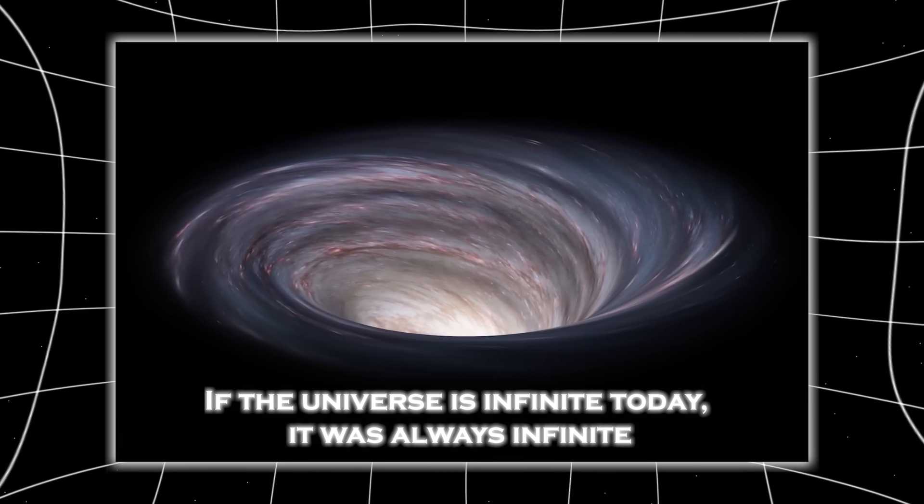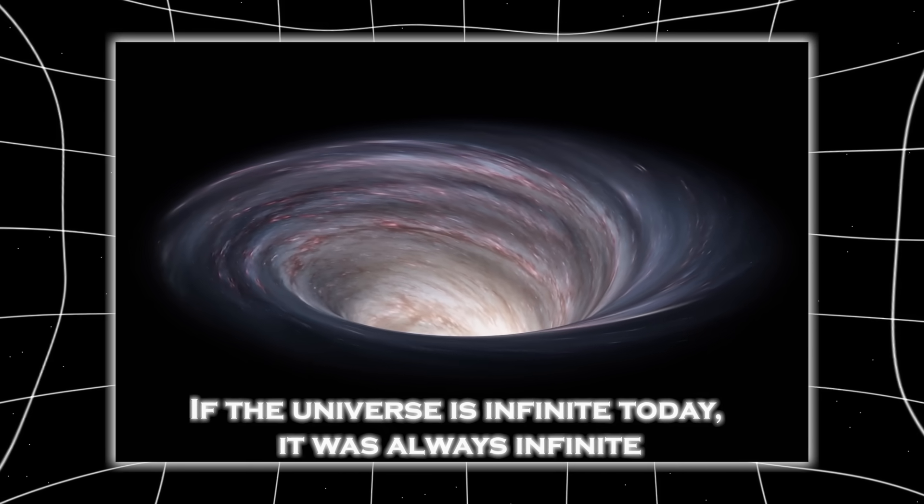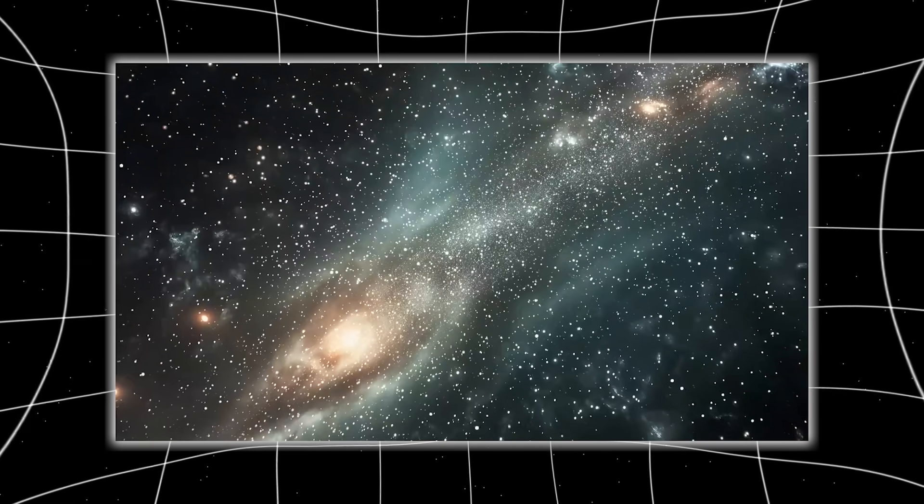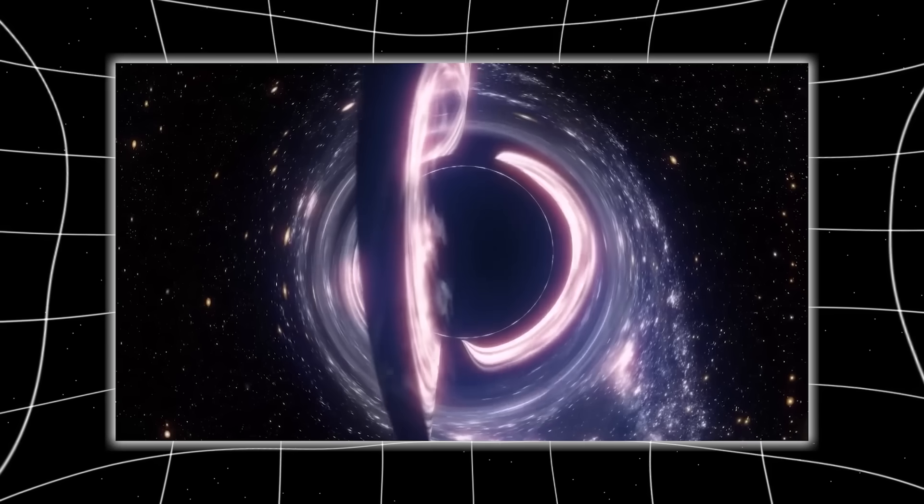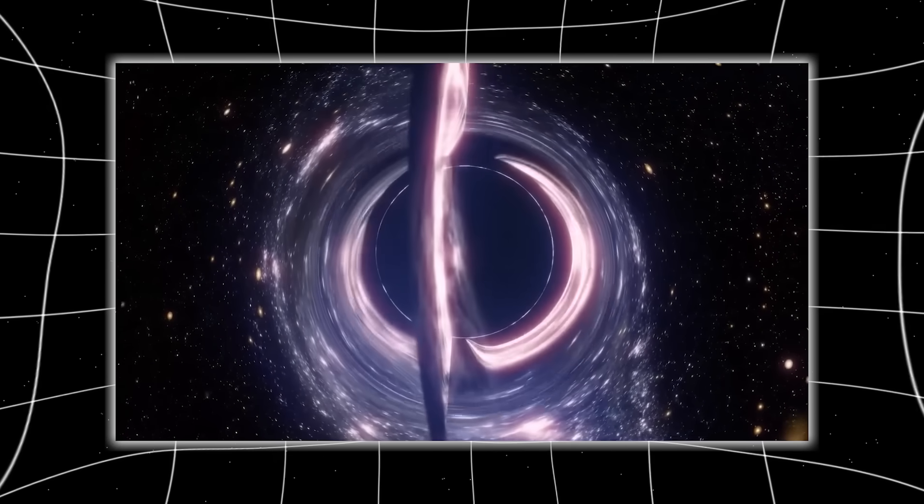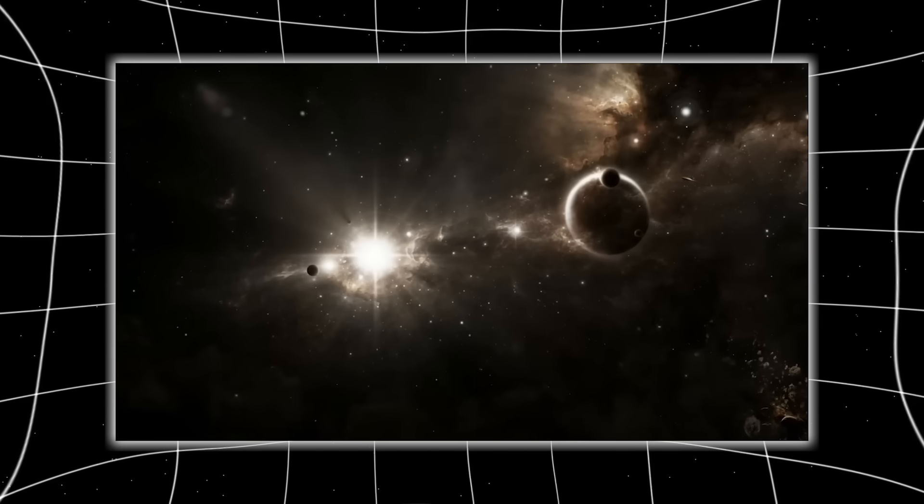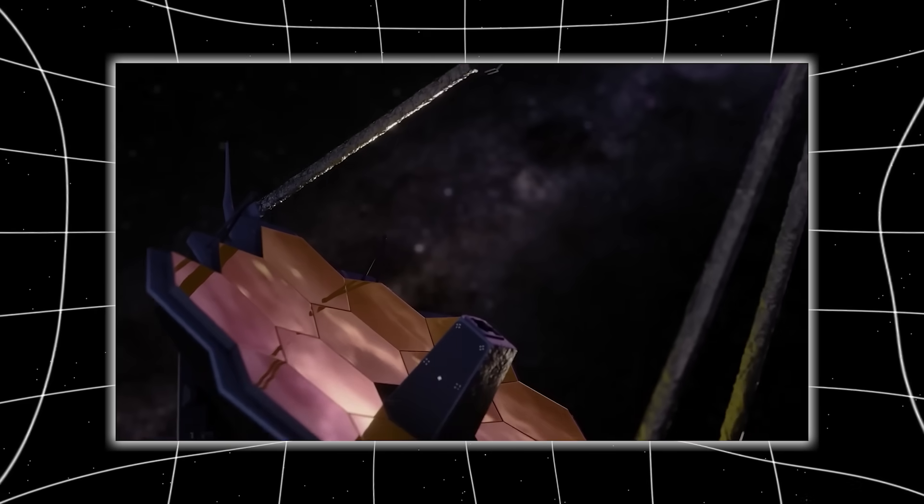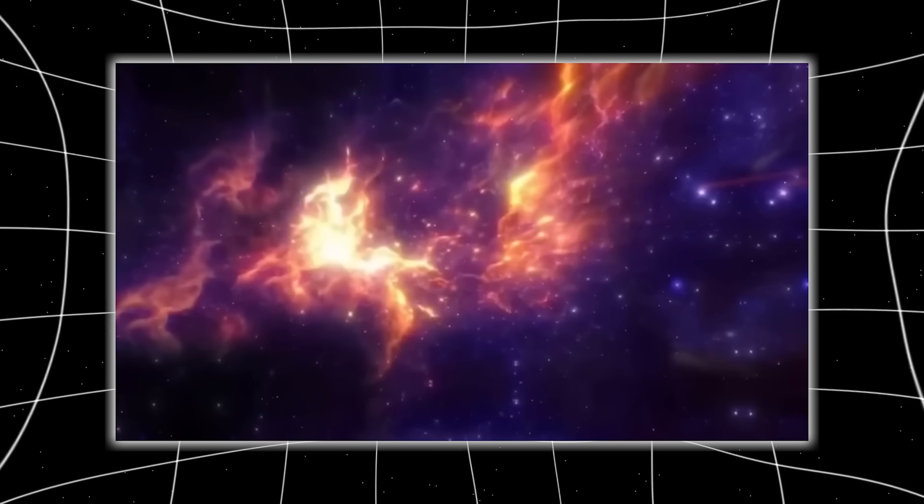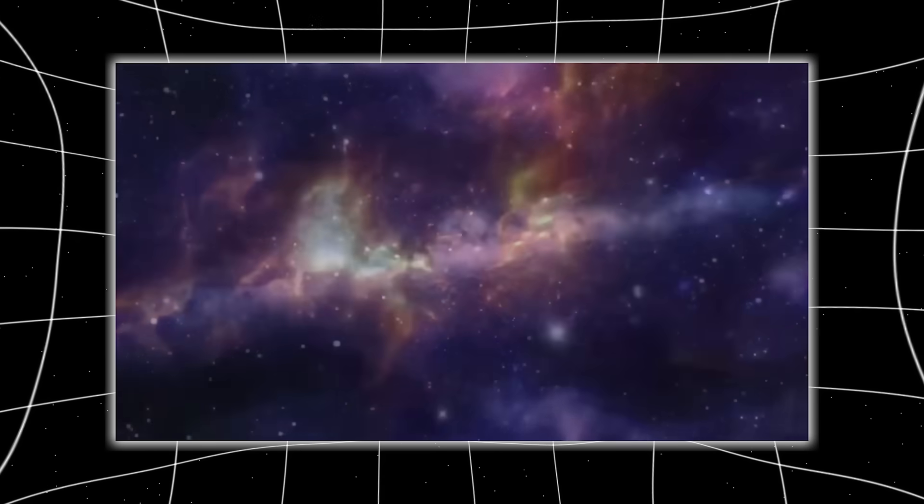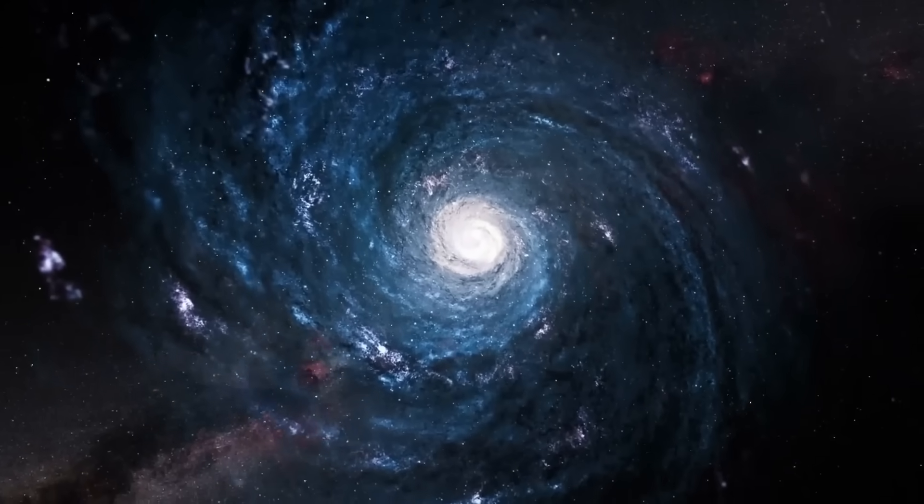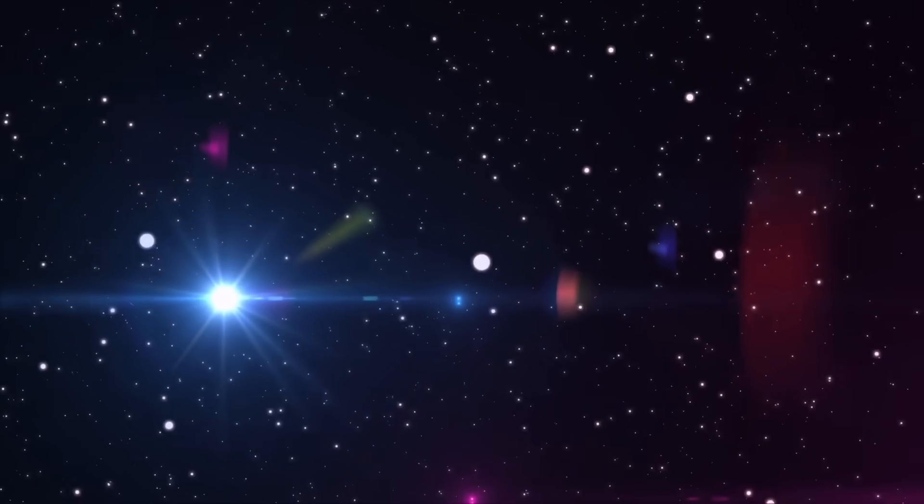If the universe is infinite today, it was always infinite. That means the Big Bang did not happen in one place. It happened everywhere, simultaneously, across an already infinite cosmic expanse. And if the universe always existed in some form, then what Webb is showing us are not early galaxies. They are the remnants of processes that began long before the Big Bang became visible to us. This is not an adjustment to the model. This is the death of the model.